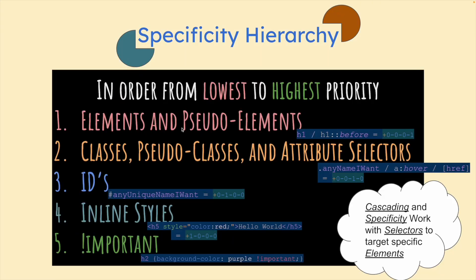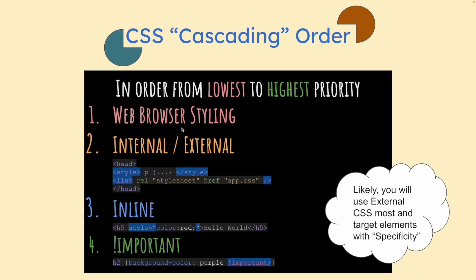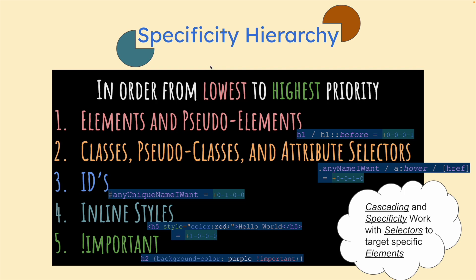Hello and welcome back to another video. In the last video, we talked about cascading order and working from lowest to highest priority. Basically, if you write in a style, it's the last one written that's going to win as far as cascading order goes. Inside the head, depending on which one of link or style goes first, the last one gets drawn. Same thing with inline, which is overridden by important.